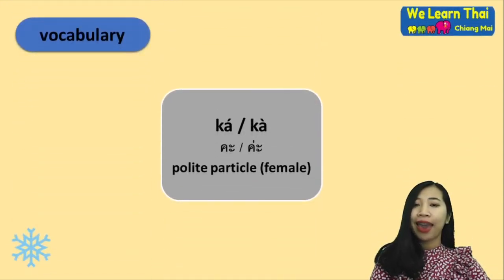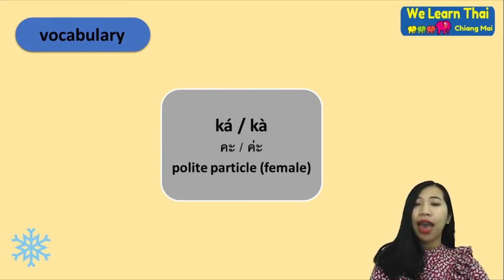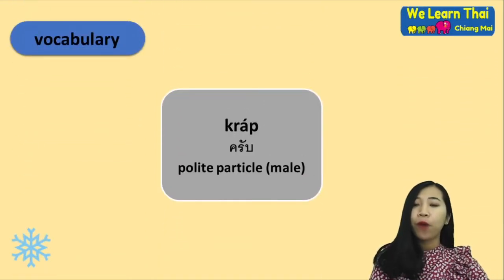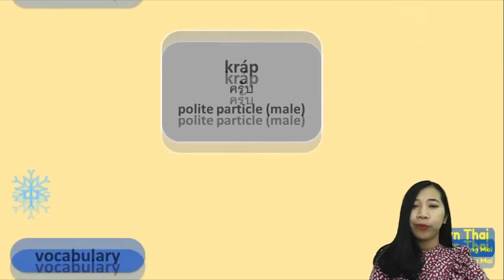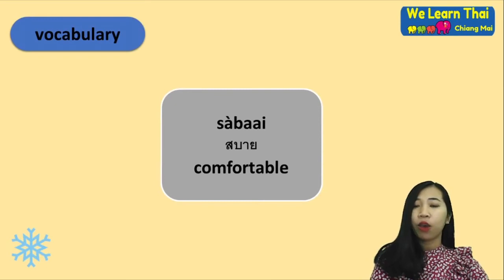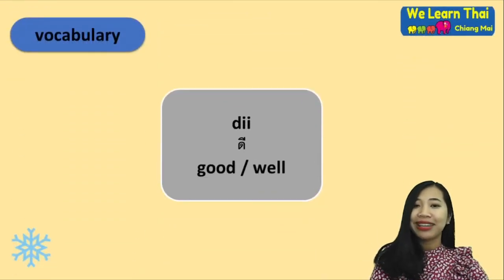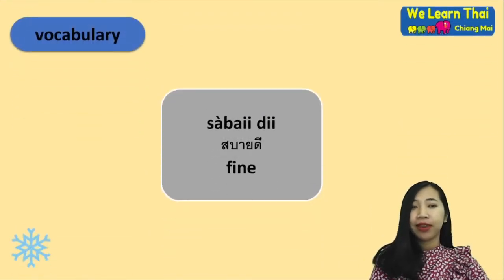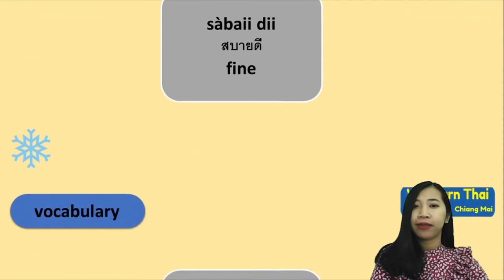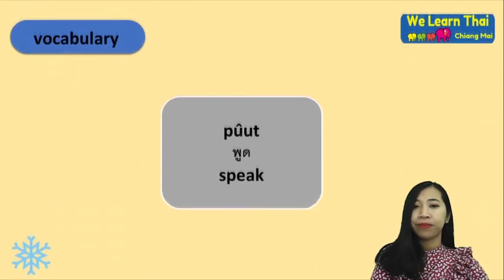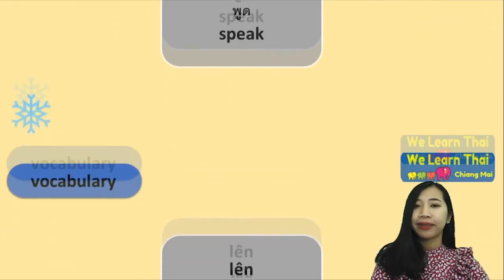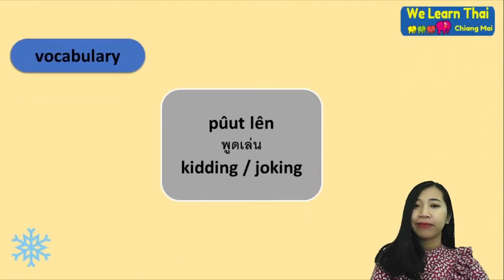For the polite particles: 'Khrap' — used by men — and 'kha' — used by women. The word 'kha' in high tone is used for questions, and 'kha' in low tone is usually used for answers. 'Krap' and 'kha' are polite particles. 'Sabai' means comfortable. 'Dii' means good or well. 'Sabai dii' means fine. 'Maa' means come. 'Phut' means speak. 'Len' means play. 'Phut len' means kidding or joking.